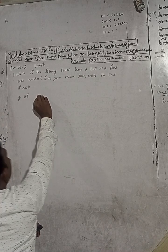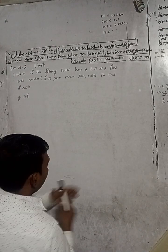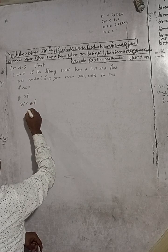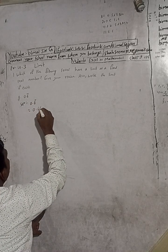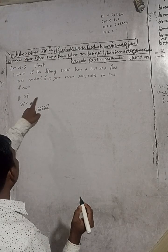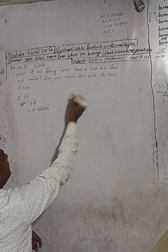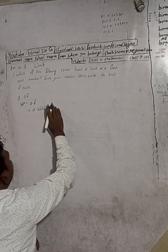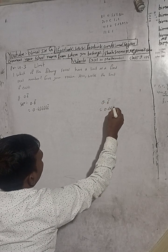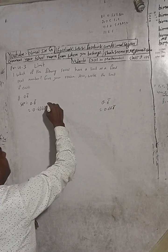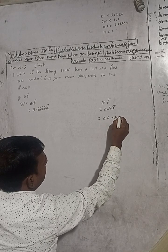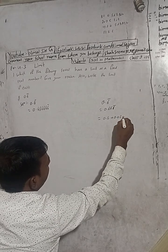Consider the series: 0.6, 0.66, 0.666, ... where 6 is repeated. We can write 0.6 bar as equal to 0.666... This equals 0.6 + 0.06 + 0.006 and so on — an infinite geometric series.